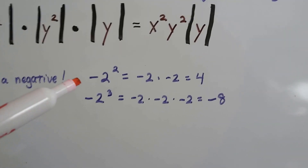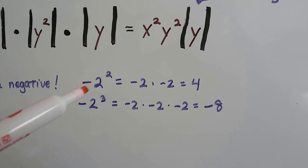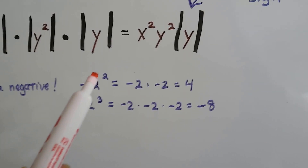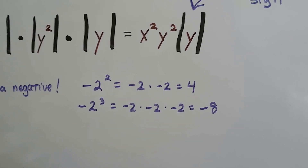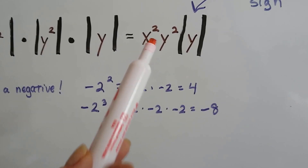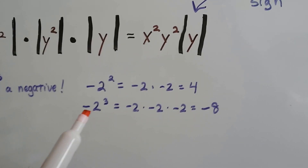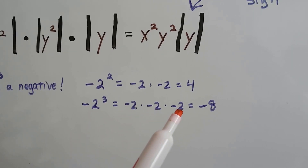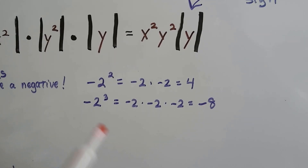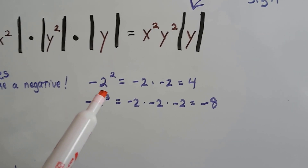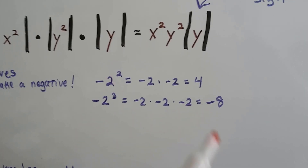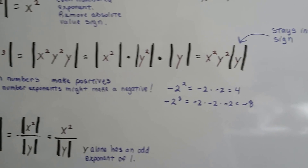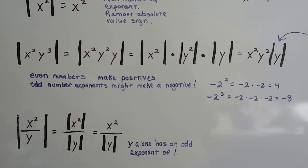Even number exponents make positives; odd number exponents might make a negative. For example, negative 2 to the second power: negative 2 times negative 2 makes positive 4. So any time we have an even exponent, it's going to make a positive number and we can pull it out when we simplify. But if we have an odd exponent — like negative 2 to the third power, which is negative 2 times negative 2 times negative 2 — that's negative 8. So we need to pull out negative 2 squared and leave one factor, the remaining y, inside the absolute value bars because we don't know if it's negative or positive.